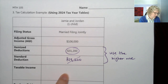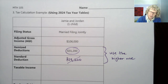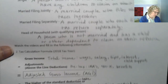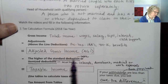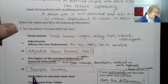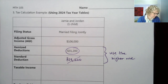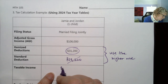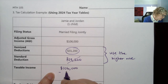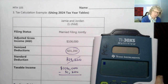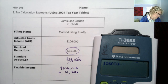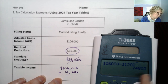To get our taxable income, we subtract. The formula is: adjusted gross income minus the higher of the standard deduction or the itemized deductions equals taxable income. So we write $106,000 minus $31,200, which comes out to $74,800.